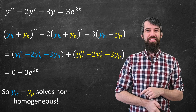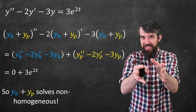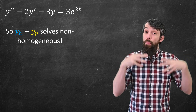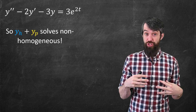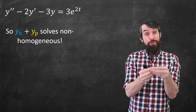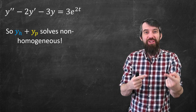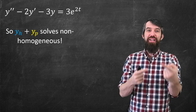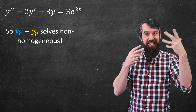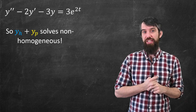So here's the idea: if you have a particular solution and I have a homogeneous solution, we can add our solutions together and that still solves the non-homogeneous equation — that's another solution to the non-homogeneous equation.